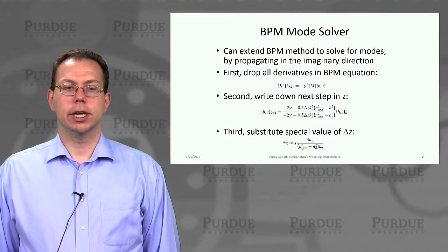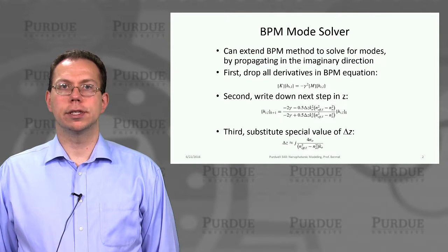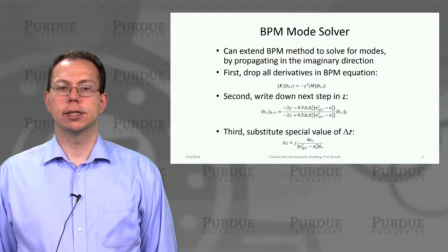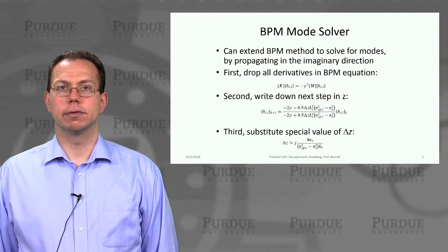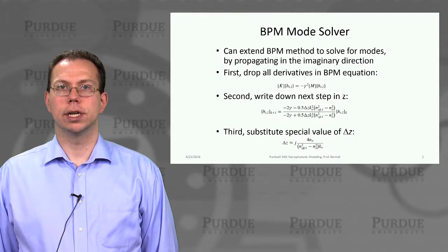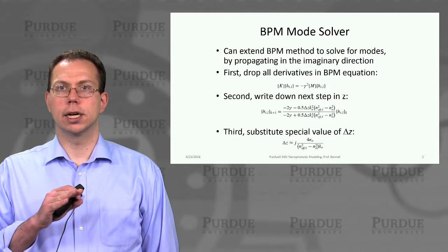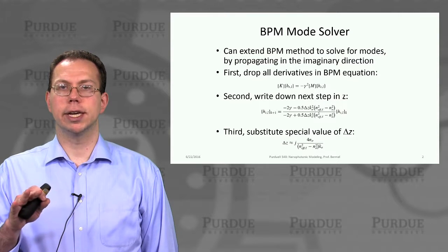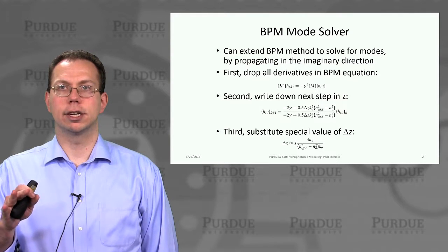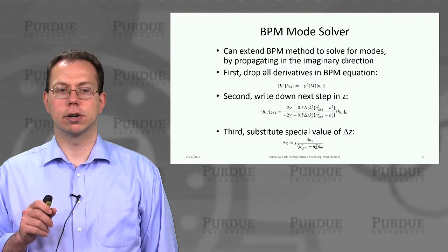We can use the beam propagation method to solve for the modes of a waveguide system. The easiest way to do that is by propagating in the imaginary direction, which may not be obvious, but basically what it allows us to do is to take a guess solution which may have multiple modes, and then attenuate some of the modes faster than others, so we're left with our core solution.